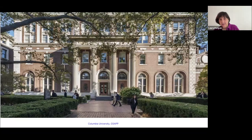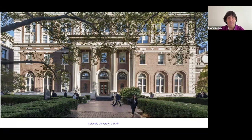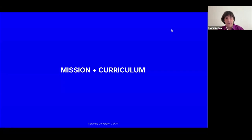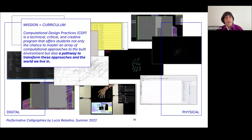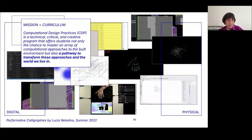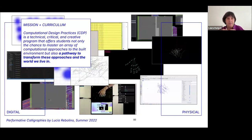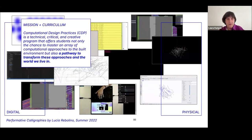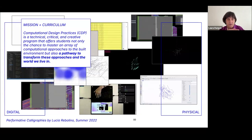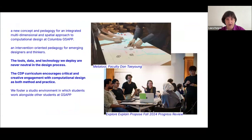If nobody's been to Columbia, this is Avery Hall on the Columbia campus where a lot of activities take place. Our program is actually part of the architecture studios. If you get accepted and come, you will likely have studio on the sixth floor of this building, either on the north or south side, mixed in with the architecture students. Our program is in its third year — it's the youngest program at GSAP.